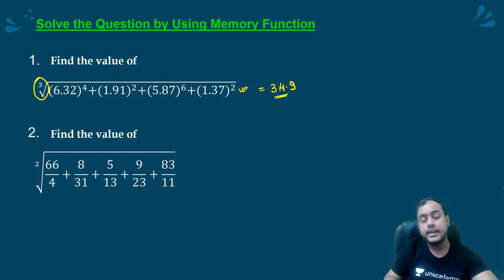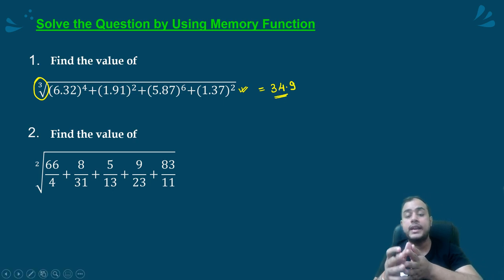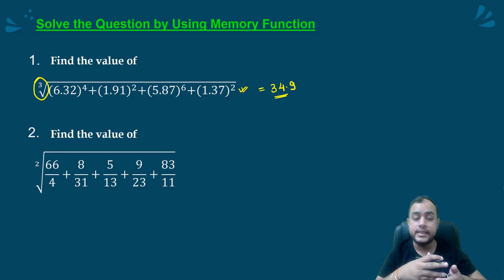So guys, this can be really helpful when you want to calculate the RMS value of a Fourier series because in that case, you have a lot of squares to be added and then you have to take the square root. Similarly, let's try the next one.